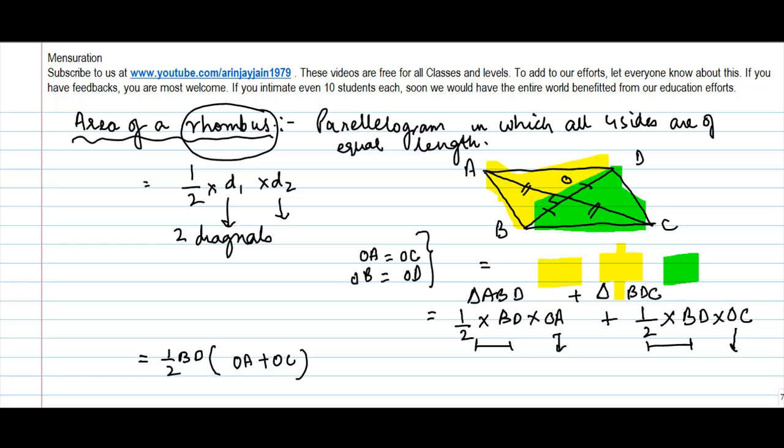Picking up OA from here and OC from here, right? But what do we notice here? OA plus OC is nothing but AC. So you can also write this as half BD into AC. And what is BD? BD is nothing but your first diagonal. AC is your second diagonal, and hence the derivation of this formula comes.